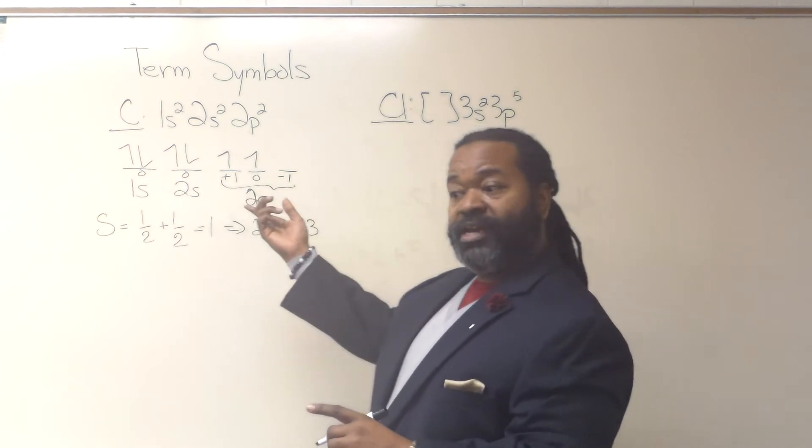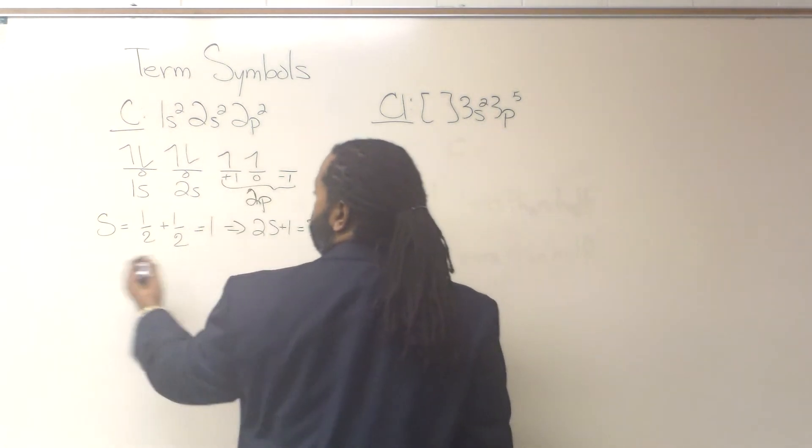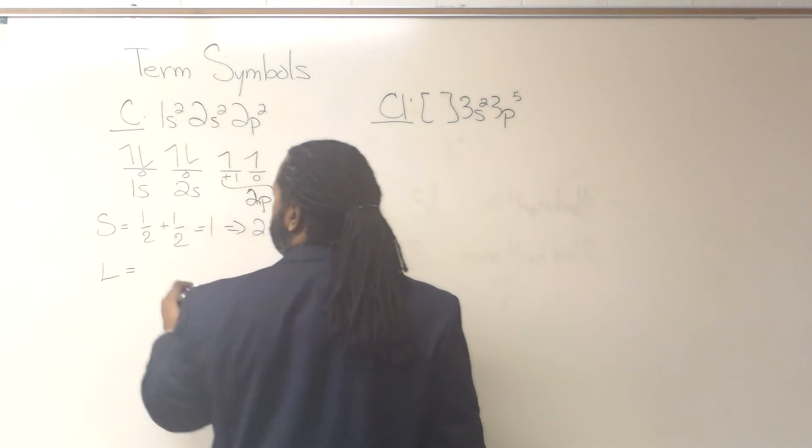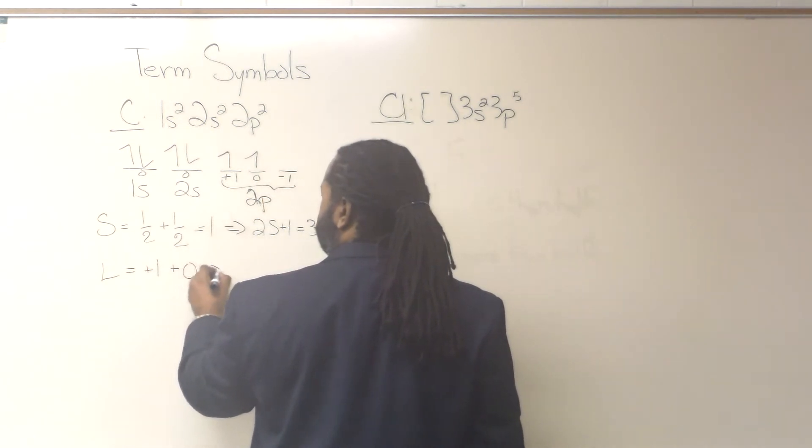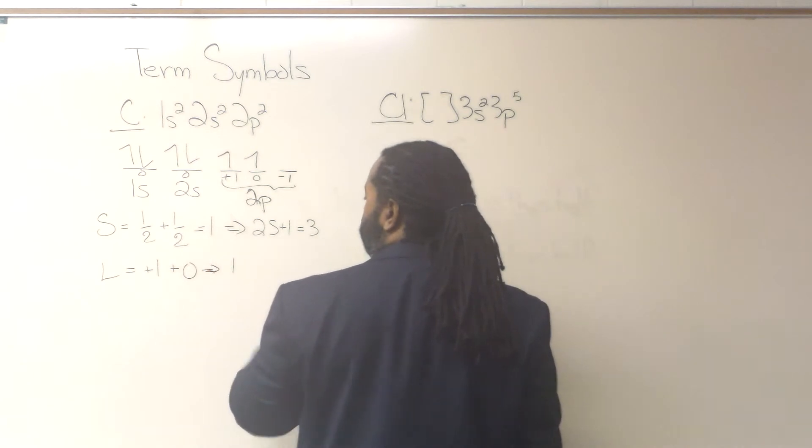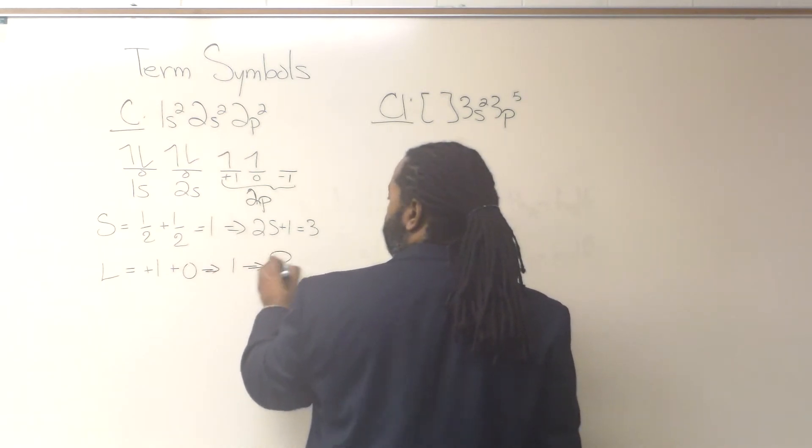Next, to find a value for l, we'll just add up these. So that's a plus 1 and a 0. So l is going to be 1, which means that we have a p.